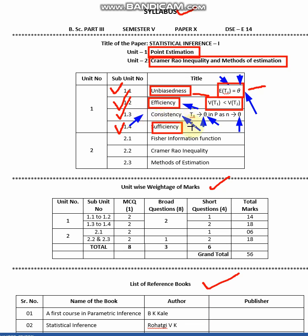The property of sufficiency states that whatever information is contained in the sample about the population should be sufficient. A statistic T is said to be sufficient or exhaustive if it contains all the information about the parameter theta that is contained in the sample. If this is the case, we can say that the estimator is a sufficient estimator.